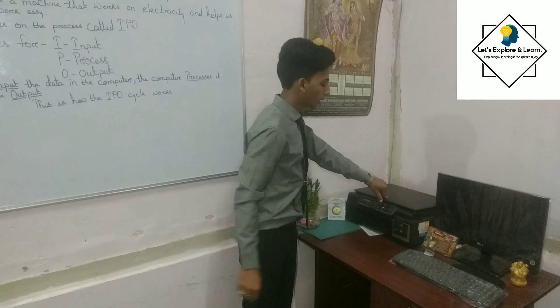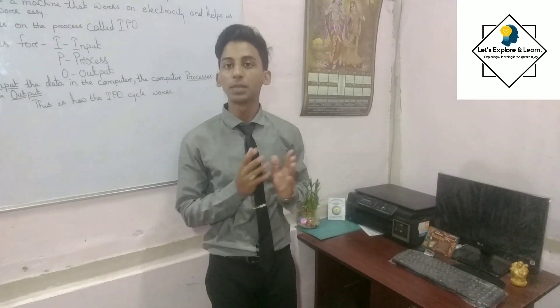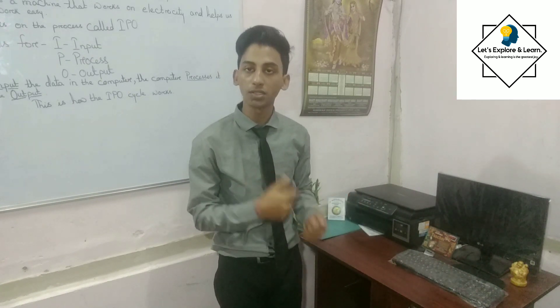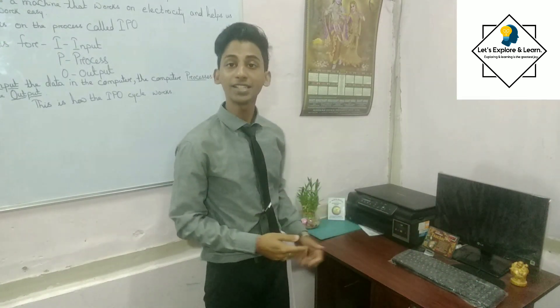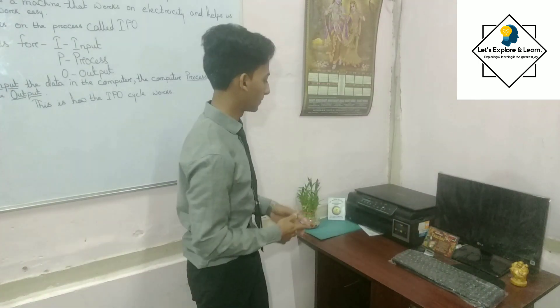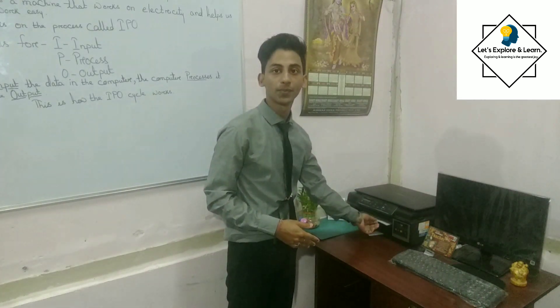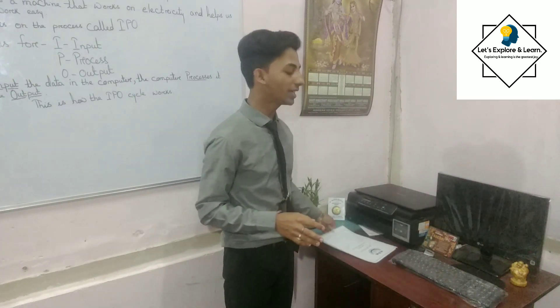Now the printer is processing. I have already given the input, and the printer is processing. Now the output will come. What is the output? The photocopy — which will be coming from the output device, for example the printer. Now I have got the output. That copy is the output. So now we can understand what is input, process, and output.